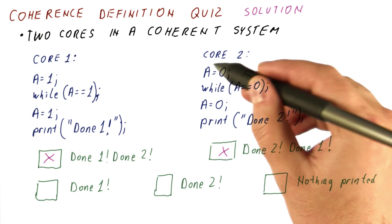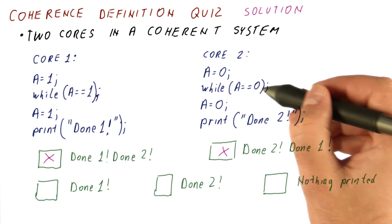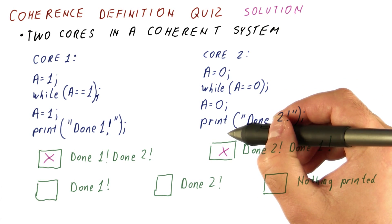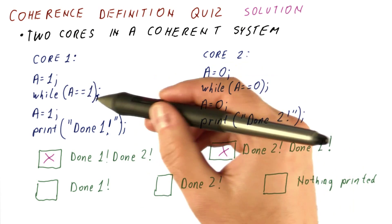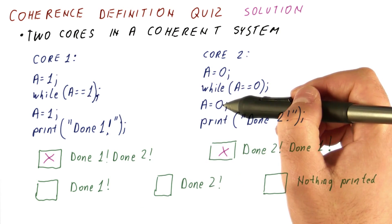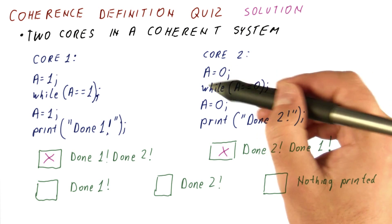That's not possible, because core two sets A to zero, and then waits for it to become non-zero. So core two cannot finish the whole thing until core one does at least this, at which point we are back to the first case of core one will eventually see that the A is zero, because core two set it that way.